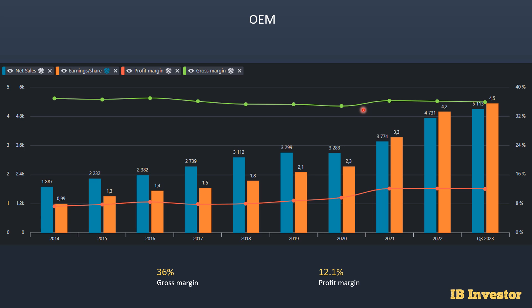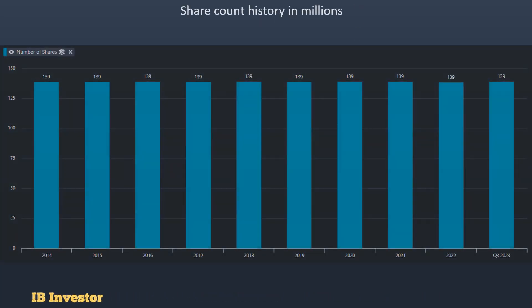One concern when you see strong net sales and EPS growth is whether the company has issued a lot of shares, causing dilution. This company has had absolutely zero dilution — they had 139 million shares in 2014 and still have 139 million shares in the most recent trailing 12-month period, which is very good to see.